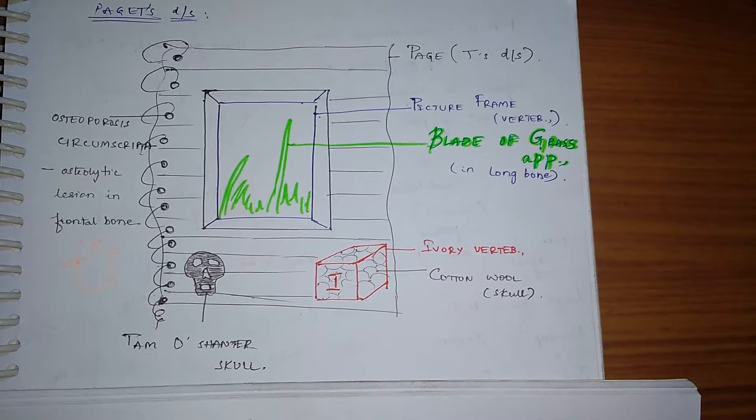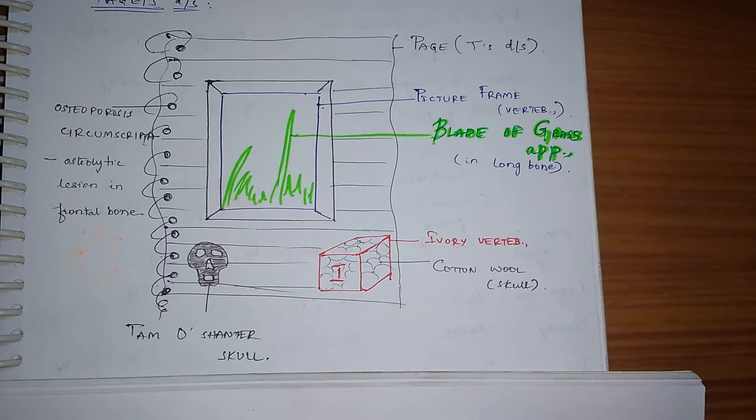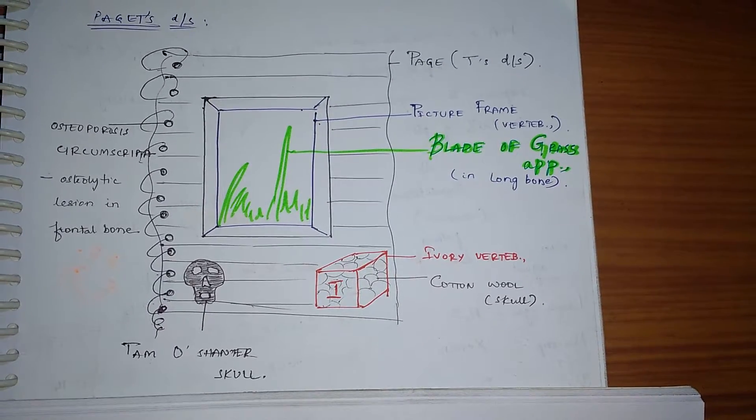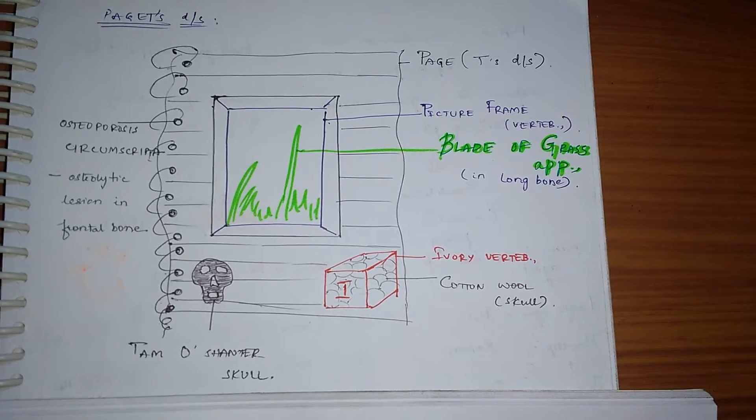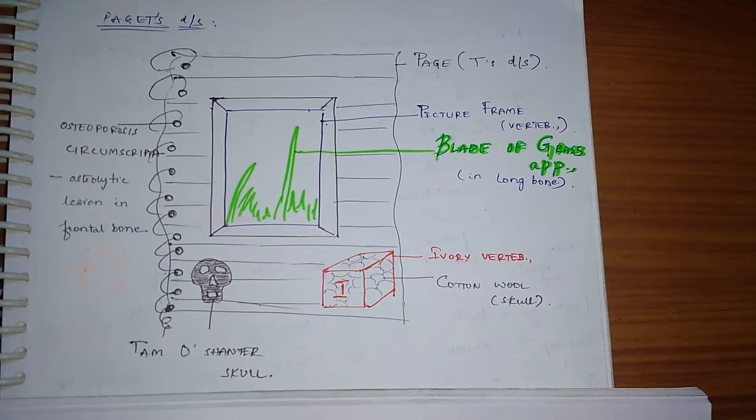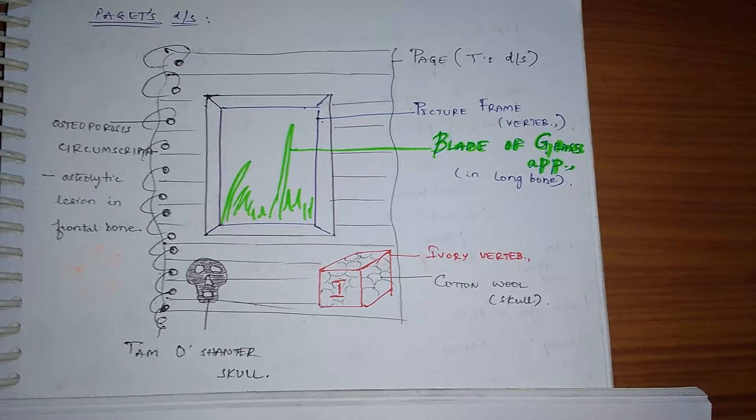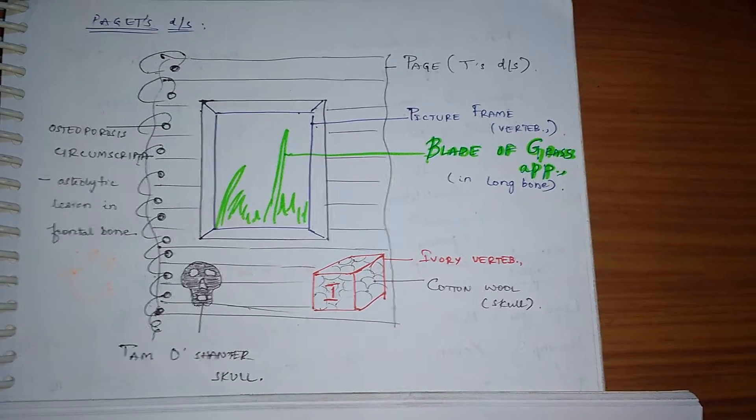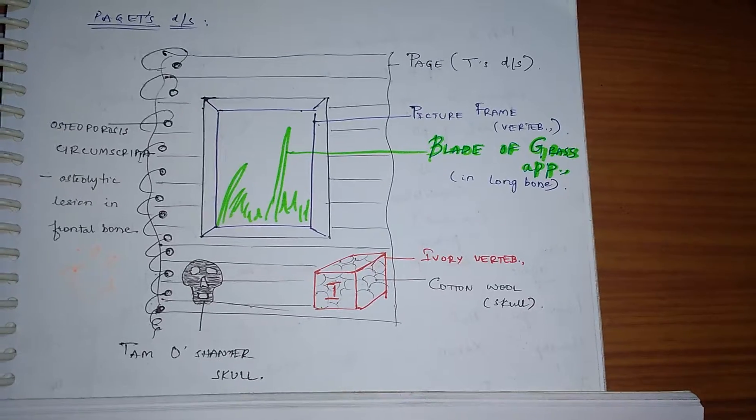So the spiral-binded holes of the pages you can remember for osteoporosis circumscripta, that is osteolytic regions in the frontal bone. Page is for Paget's disease. Picture frame is for picture frame vertebra. The blade of grass is the blade of grass sign in long bone.